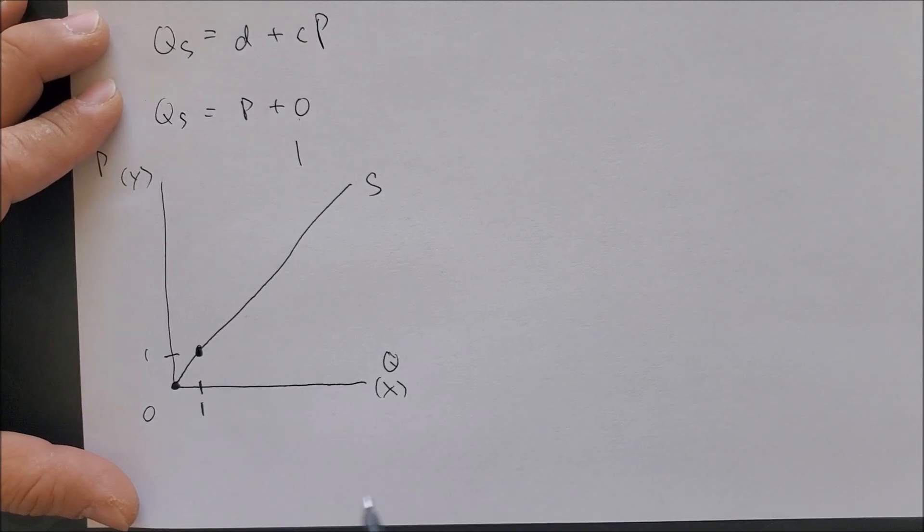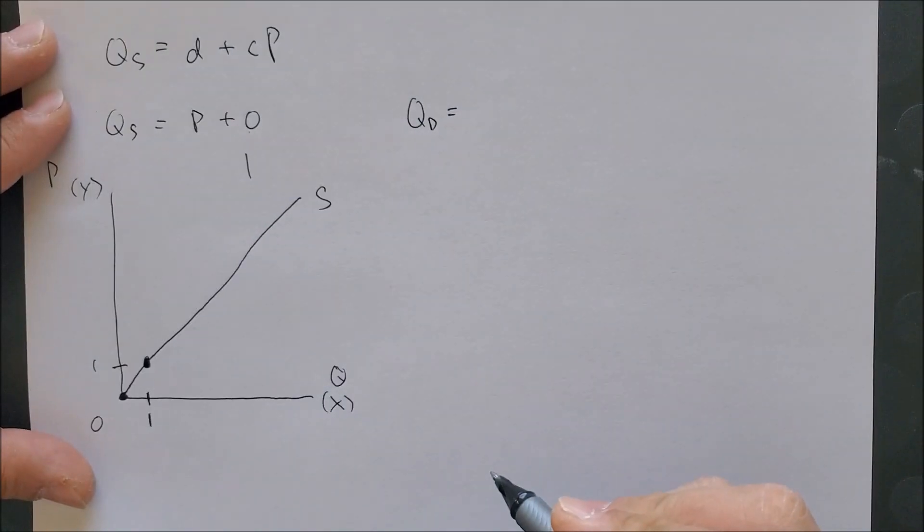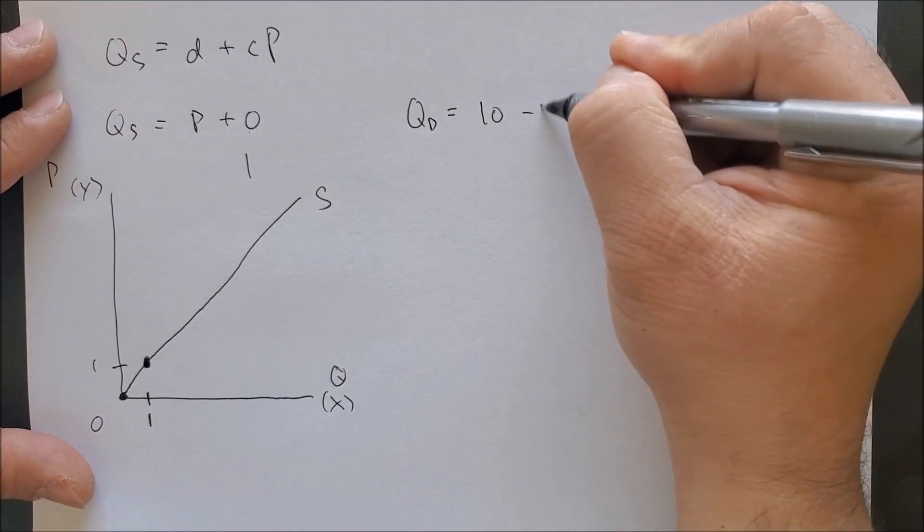Now I'm going to bring back the demand equation from the previous video. The demand equation we used was Q sub d equals 10 minus P.